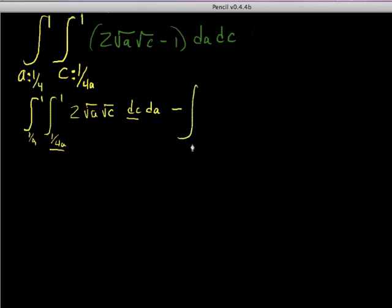Subtract off the integral from 1/4 to 1, c goes from 1/(4a) to 1 of negative 1, so this is dc da.